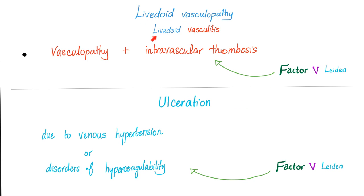Livedoid vasculopathy involves vasculopathy plus intravascular thrombosis together. Factor V Leiden can increase your risk of intravascular thrombosis, which can increase your risk of livedoid vasculopathy. Regarding ulceration, the probable most common cause is venous hypertension or disorders of hypercoagulability such as Factor V Leiden — that's why Factor V Leiden can lead to ulcerations.